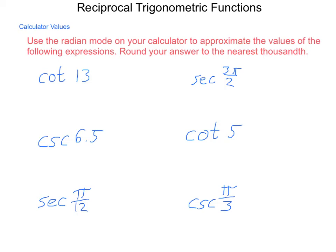So let's take a look at how to do this. The cotangent of 13 is simply going to be 1 divided by the tangent of 13. This is a little bit over 2π, but 1 divided by the tangent of 13 calculates out to be approximately 2.160.